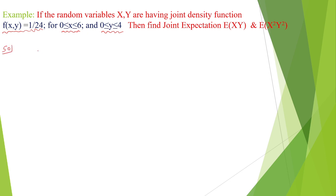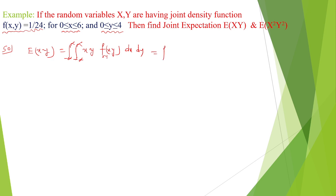We know that the joint expectation E(xy) can be defined as the double integral of x·y multiplied with f(x,y) dx dy. The limits are 0 to 6 and 0 to 4 for y, and x·y multiplied with f(x,y) equals 1/24, then dx dy.